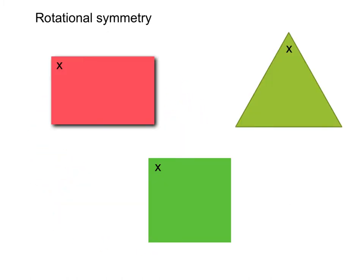It is quite easy to see that this rectangle has a rotational symmetry of order two. This equilateral triangle has a rotational symmetry of order three. And this square has a rotational symmetry of order four.